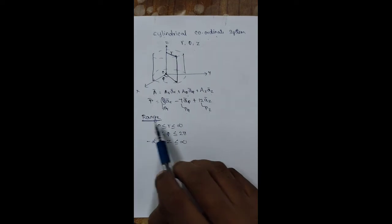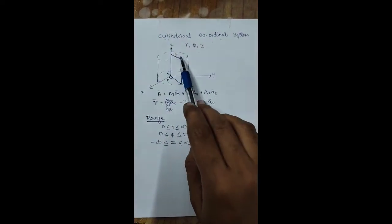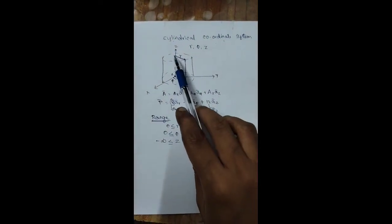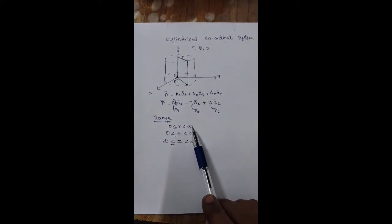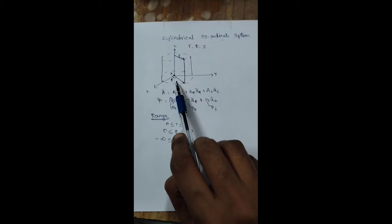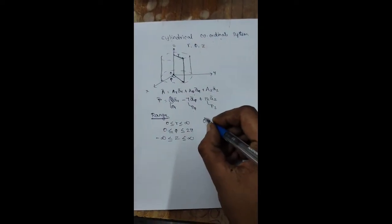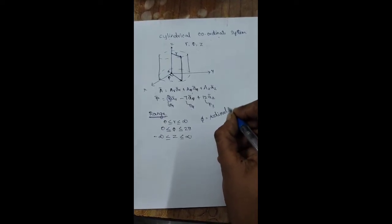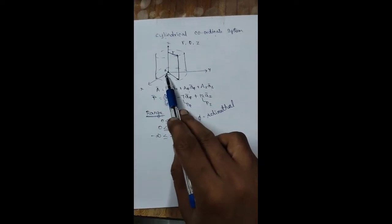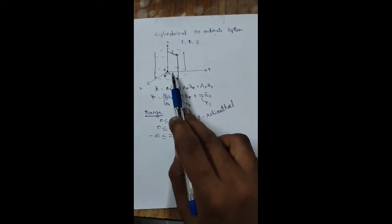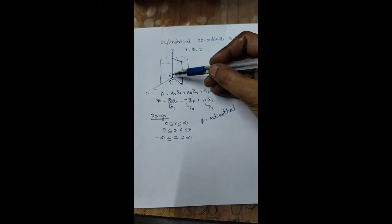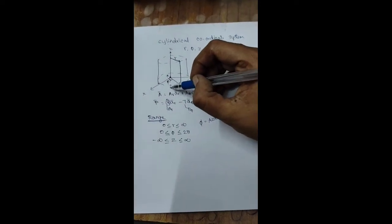Next we are going to see about the range of these three variables. r is the radius of the cylinder, so the radius varies from 0 to infinity. Phi is the half plane making a certain angle with the x-axis, also known as the azimuthal angle. Phi varies from 0 to 2π, going around the circle. z varies from minus infinity to plus infinity, because there is a positive z and in the opposite direction a minus z.